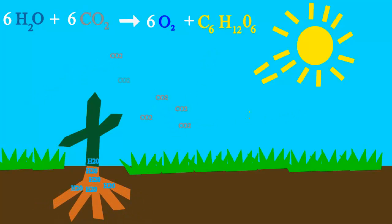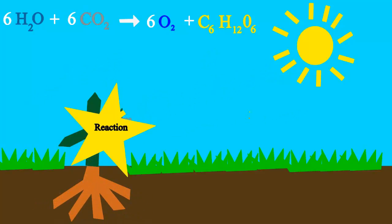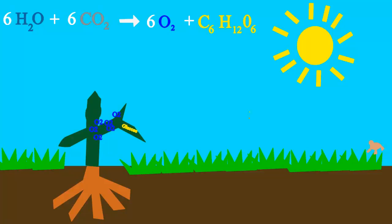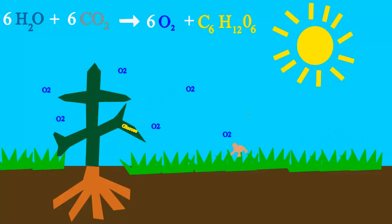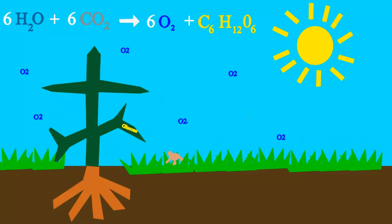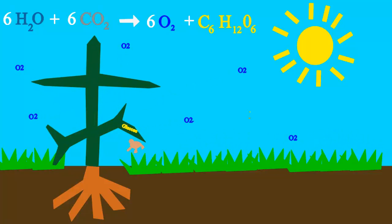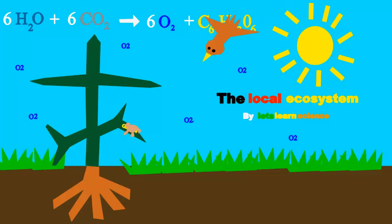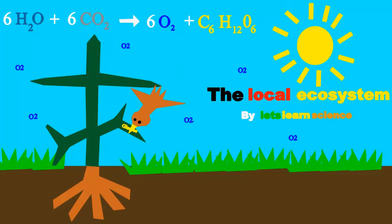Plants take water, sun, and CO2 to make glucose, the sugar that they use for food. They also put oxygen into the air so we can share, because oxygen is everywhere.